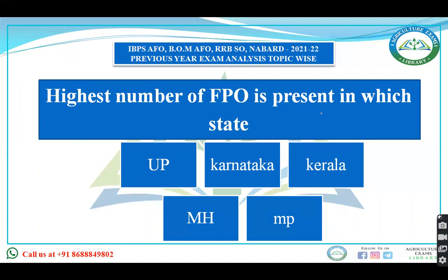FPO — you are very aware of these terms nowadays; this is very popular from an exam point of view as well. The highest number of FPOs is present in UP, followed by Karnataka. So, highest number of Farmer Producer Organizations is present in Uttar Pradesh.